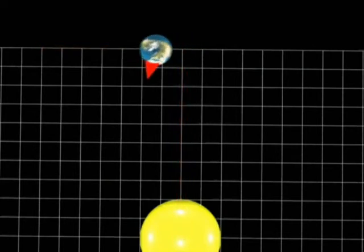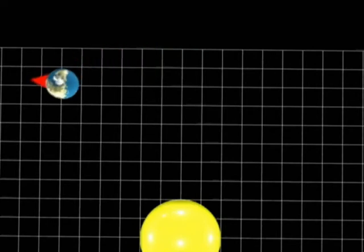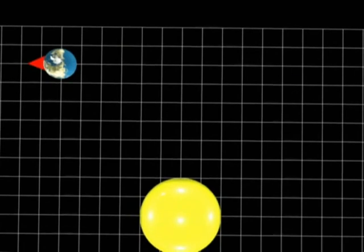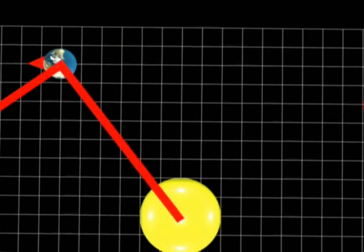Watch as we have the Earth rotate once on its axis as it moves along its orbital path. You can see that after one rotation, the red pointer is not at a right angle to the Sun.